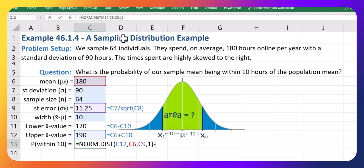comma 1. And subtract from it the smaller x value, the 170, put in the mean again, and the standard error, comma 1, for cumulative equal to true.